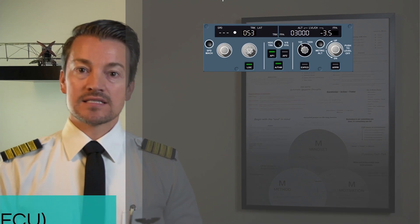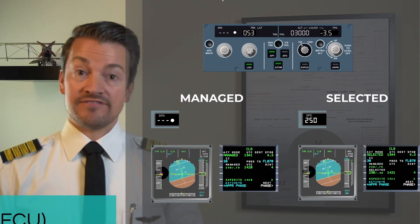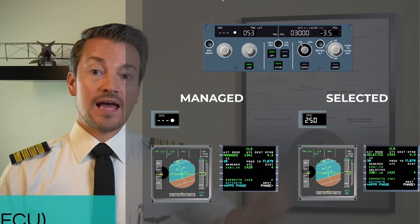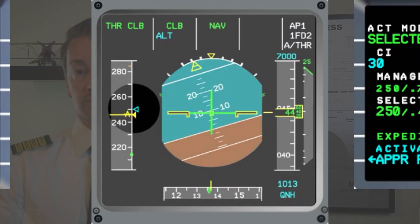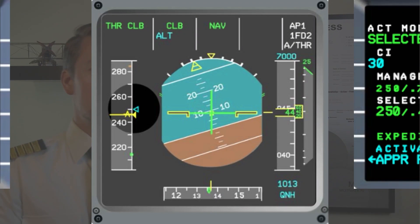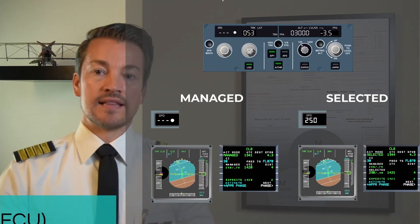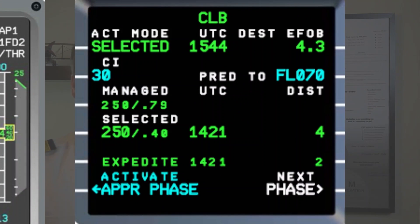When using selected guidance, the value shows up in the window, the dot next to the value is not there, and the target changes from magenta to blue — you can see the speed target is now blue. The altitude displayed at 7000 is also blue, meaning it is selected. Looking at the MCDU, the climb page has changed to selected mode, and the active mode in the upper left corner now shows 'selected.'